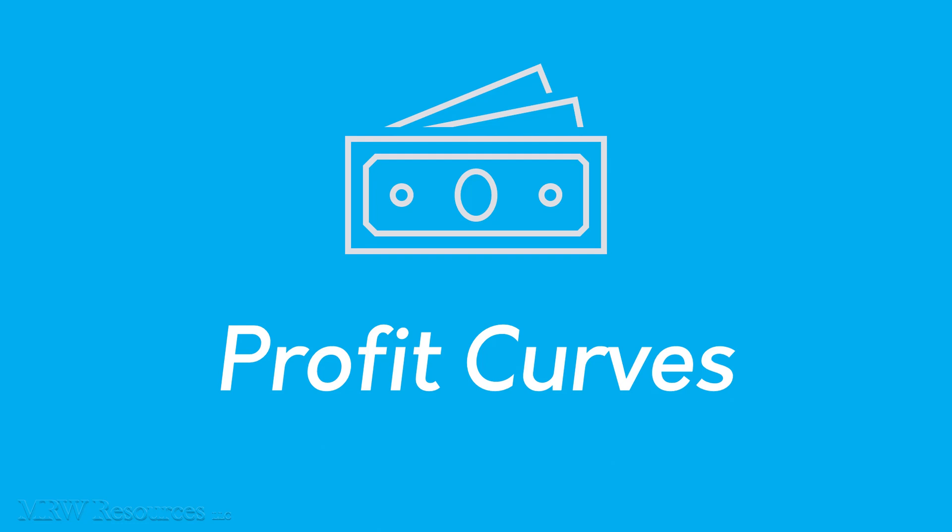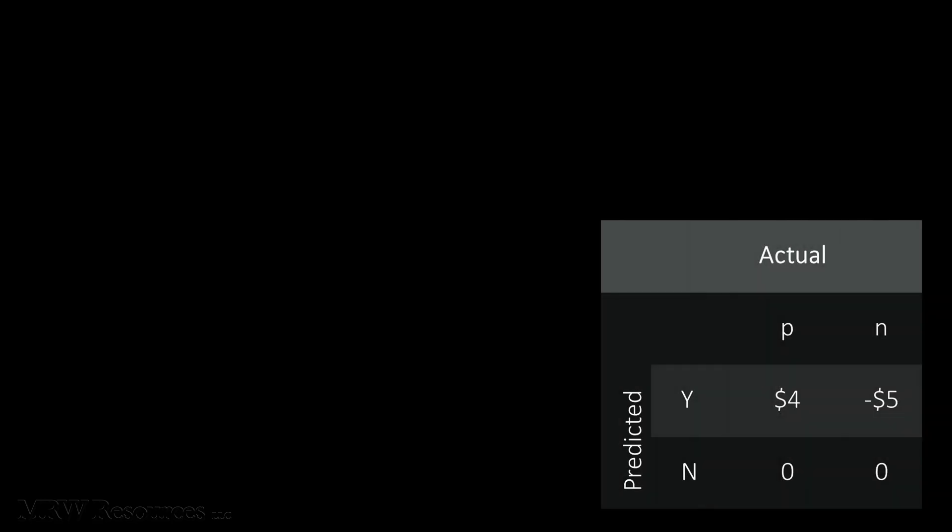Even though we call it a curve, it's really a plot of points that we typically connect with a line for visual smoothing purposes. Let's say we have a situation where we will make a $9 sale, but our offer costs $5 to market. We can create the cost-benefit matrix you see here.